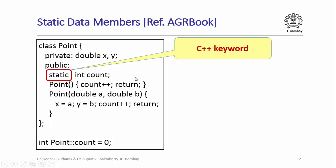Now let us look at static data members. Consider the class Point with data members x and y and two constructors — a default and a non-default constructor. Suppose I want to count how many objects of class Point are being created. I would keep an integer counter and increment it whenever a constructor is called. This counter must not be associated with any specific object of class Point; rather it should be shared across all objects of the class so that whenever any constructor is called, the same integer counter is incremented.